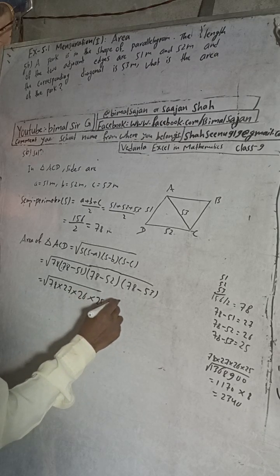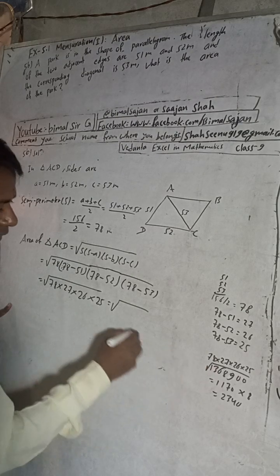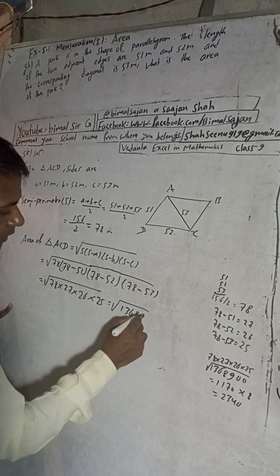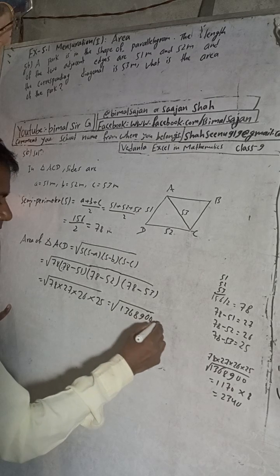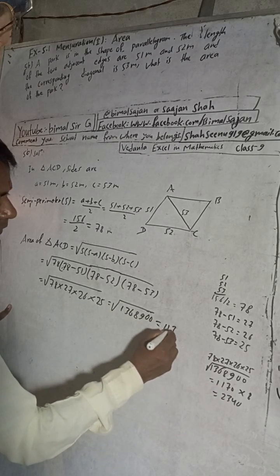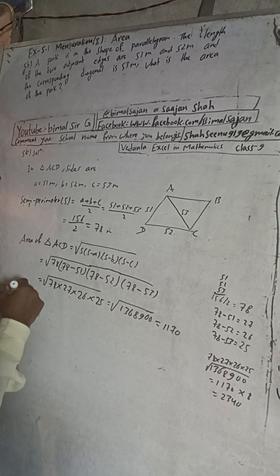Here we will get 78 into, 78 minus 51, this will be 27, this will be 26, and this will be 25. Now when we multiply this continuously, we will get 1,368,900, and the root of this will be 1170. When we calculate, we will get 1170.